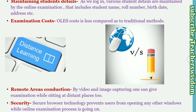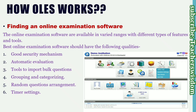How online examination works: first is finding an online examination software. It is very important to find out which examination software you want to use. Online examination software is available in varied ranges with different types of features and tools. The best online examination software should have the following qualities: good security mechanism, automatic evaluation tools, ability to import bulk questions, grouping and categorizing, random question arrangement, and timer setting.